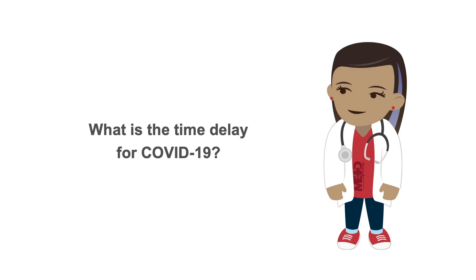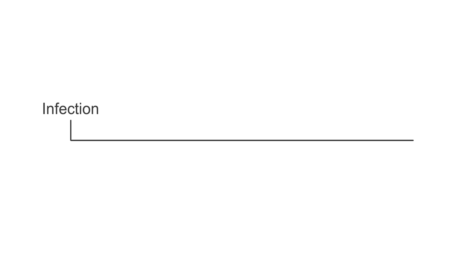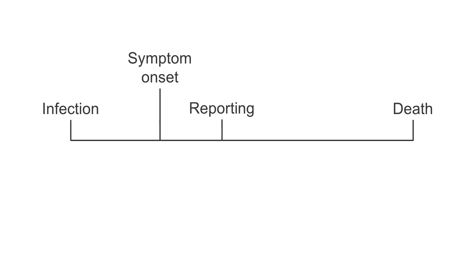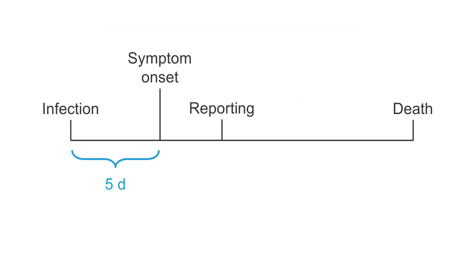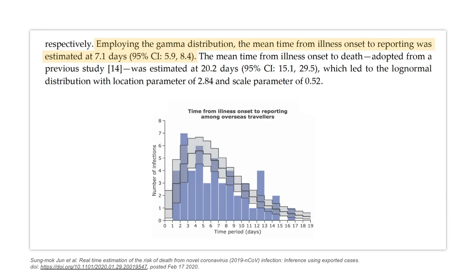What's the time delay in COVID-19? There is the time of infection, the time of symptom onset, then the time when the case is reported, and the time of death. The incubation period — the time between infection and symptom onset — has been estimated to be around 5.2 days on average. However, some patients have a much longer incubation period of up to 21, possibly even 24 days. The time from symptom onset to the reporting of a case was found to be a mean duration of 7.1 days, which will differ from country to country.